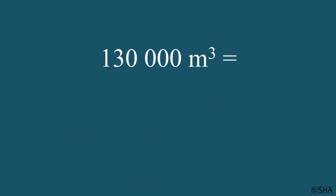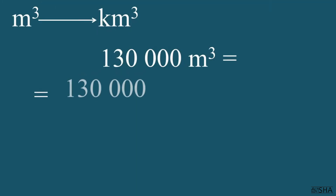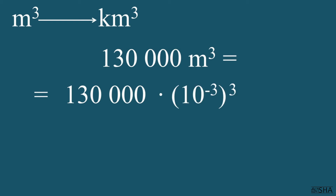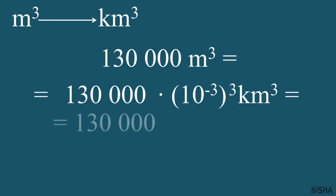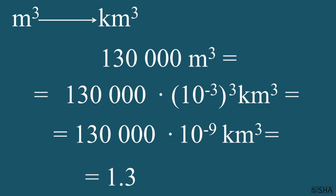Convert 130,000 cubic meters to cubic kilometers. 130,000 should be multiplied by 10 to the negative 3rd power, and we raise the factor to the third power. We get 130,000 times 10 to the negative 9th power cubic kilometers. This can also be written in standard form: 1.3 times 10 to the negative 4th power cubic kilometers.